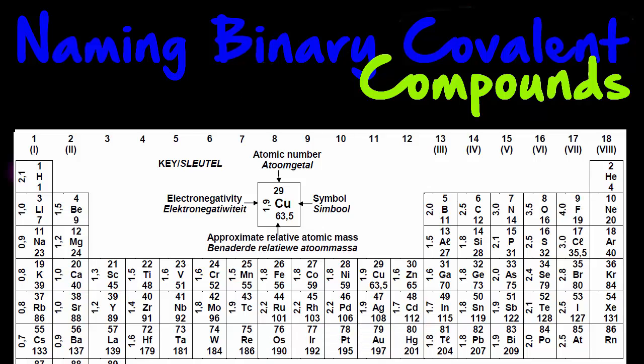Hi and welcome to this chemistry lesson where I want to take a look at naming binary covalent compounds. What am I talking about? That's a mouthful. Well, first of all, a binary compound is a compound with two elements. That's what the binary stands for. And these two elements are in a covalent bond.